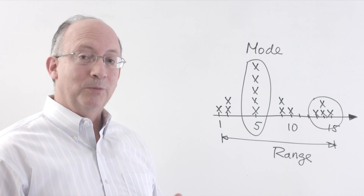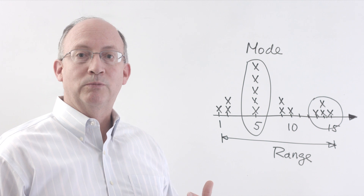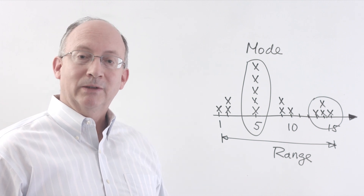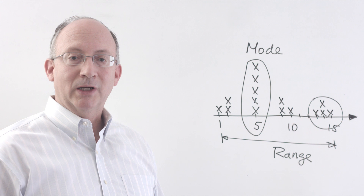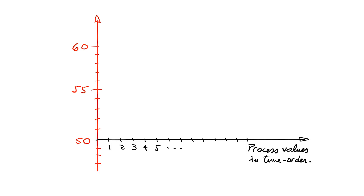So what can we do about the behavior of the variable, which actually is what matters, because it may give us the ability to predict what's going to happen in the future? The behavior of a variable over time can only be shown on something called a run chart. A run chart shows the behavior of one variable over time. Let's say we have a variable x that could take on different values. In time order: 52, then 55, 54, and 58 — let's just take these four values.